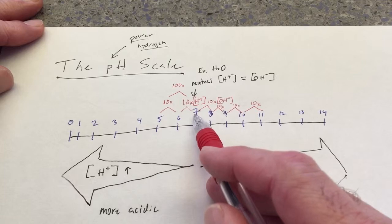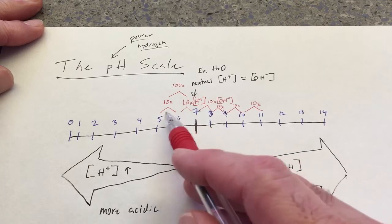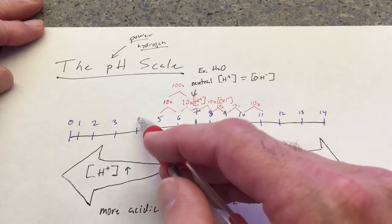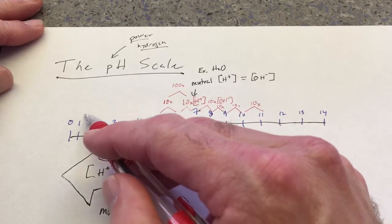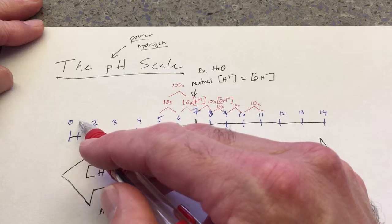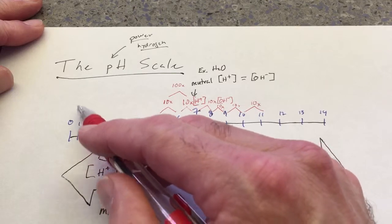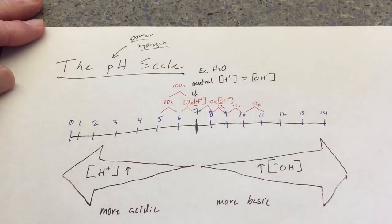Here, pH 5 is 100 times more acidic than pH 7. 1,000 times. 10,000 times. 100,000 times. 1 million times more acidic. 10 million times more acidic.